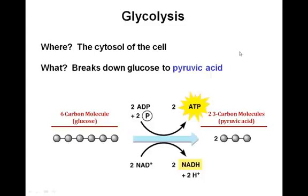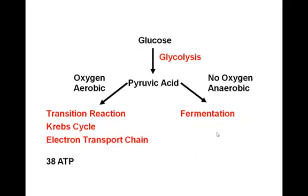Starting with a glucose molecule undergoing the first step called glycolysis, glucose ultimately breaks down to a molecule called pyruvic acid. This occurs in the cytosol or cytoplasm of the cell. Glycolysis occurs in cells that will undergo either aerobic or anaerobic respiration, and takes place in the presence or absence of oxygen.